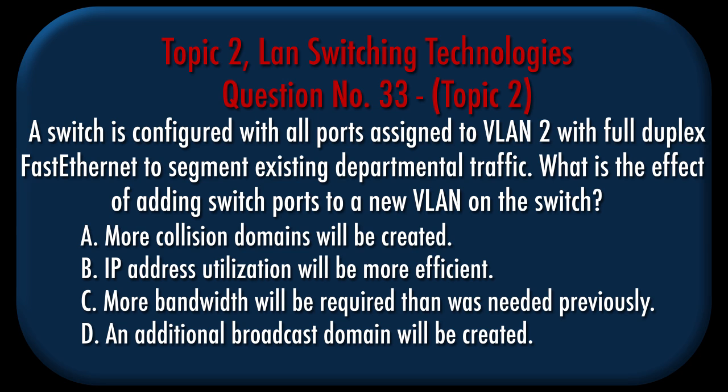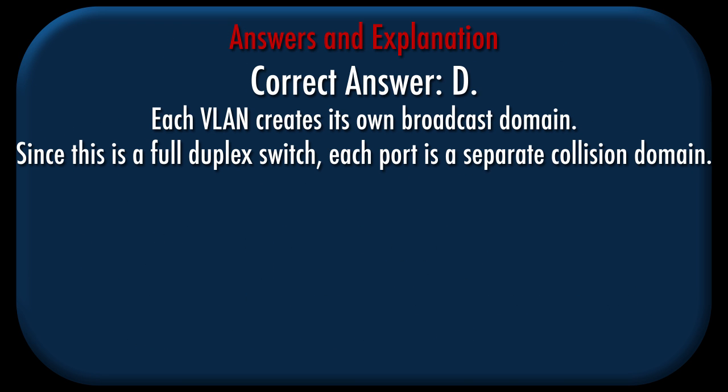Question number 33, Topic 2. A switch is configured with all ports assigned to VLAN 2 with full duplex fast Ethernet to segment existing departmental traffic. What is the effect of adding switch ports to a new VLAN on the switch? a. More collision domains will be created. b. IP address utilization will be more efficient. c. More bandwidth will be required than was needed previously. d. An additional broadcast domain will be created. Correct answer: d. Explanation: Each VLAN creates its own broadcast domain. Since this is a full duplex switch, each port is a separate collision domain.